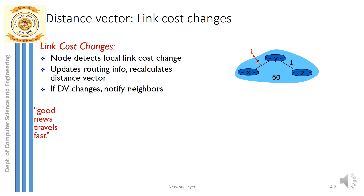Let's see what happens as the link cost changes. The link cost may not be permanent. The cost to reach from x to y or y to x is 4 at one instant of time. The next instant of time this cost is reduced from 4 to 1. We will see whether this new cost is circulated among the neighbors or not.